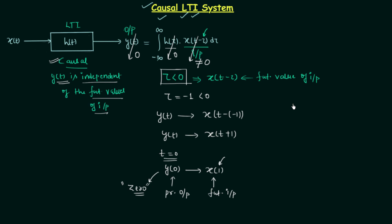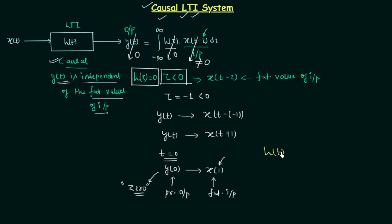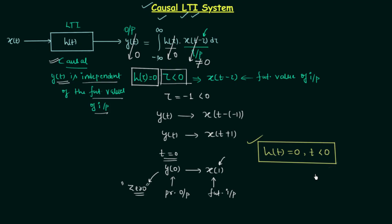This gives us one important conclusion: whenever τ is less than 0, the impulse response h(τ) should equal 0. Since τ is just a dummy variable, we can replace it with t. So finally we have the necessary and sufficient condition: the impulse response h(t) equals 0 when t is less than 0. We follow this condition to prove the given LTI system is causal in nature, and if this condition is not satisfied, then the given LTI system is non-causal.